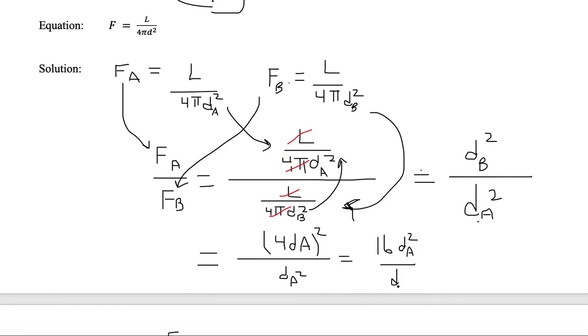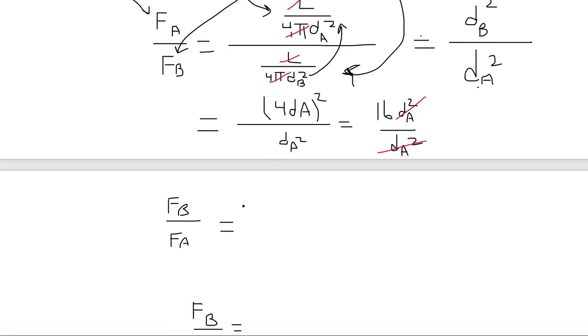Now we can eliminate like variables. dA² eliminates dA² from the numerator and denominator. And now we have our final answer: the flux of B relative to the flux of A is 16.